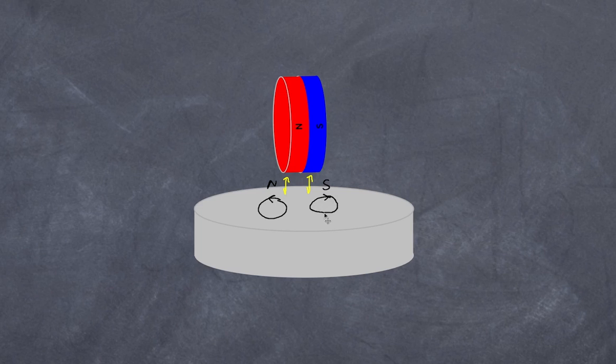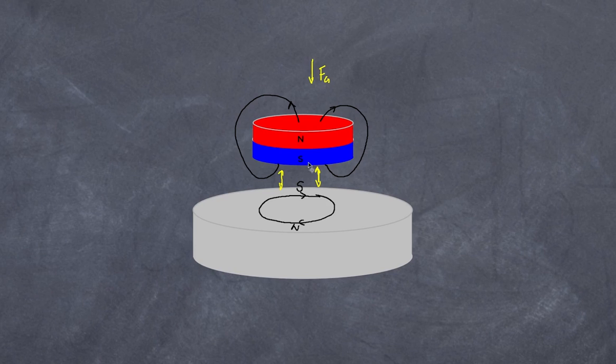I want to reiterate that I'm not explaining why those electrons actually start to move — that is a much more difficult concept explained using quantum mechanics, often referred to as a quantum mechanical effect. Needless to say, that explains why the magnet starts to levitate, whether it is oriented one way or the other. It's a balance between the repulsive forces and the gravitational force acting on it.